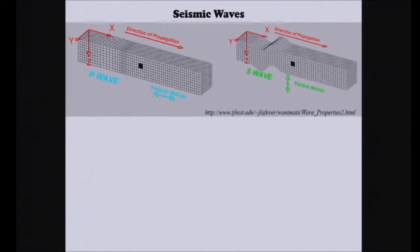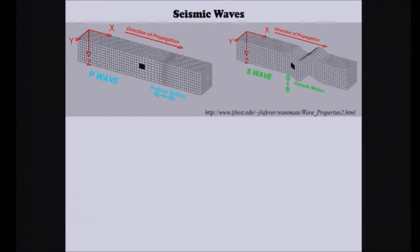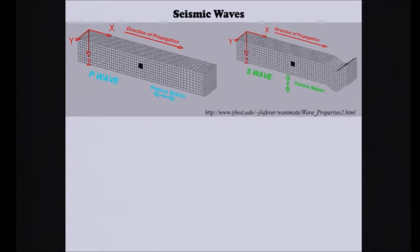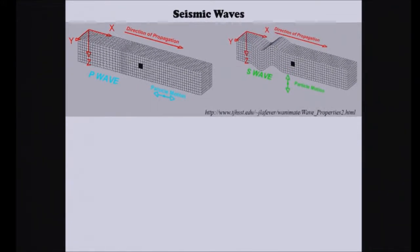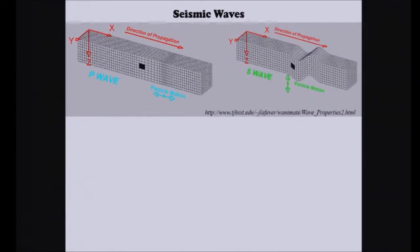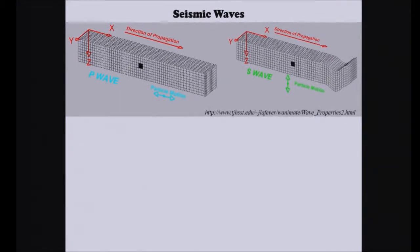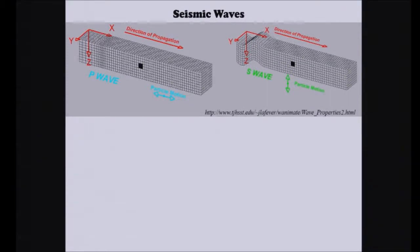Two of the main kinds of waves that earthquakes generate are what's called P waves and S waves. The P waves, or the primary waves, are pressure waves. And the S waves, or the secondary waves, or shear waves, those are transverse waves. So those are two kinds of waves that we've studied so far.